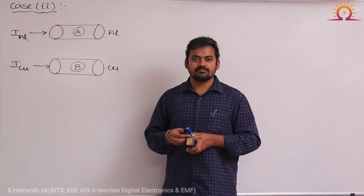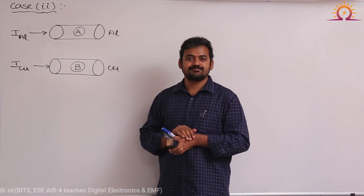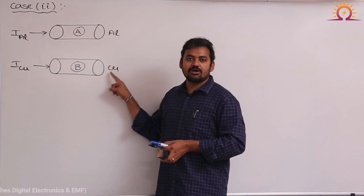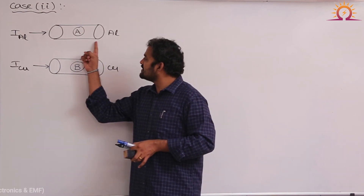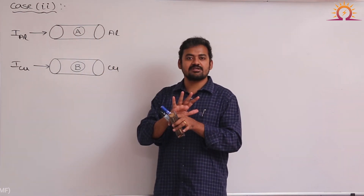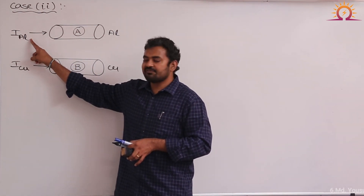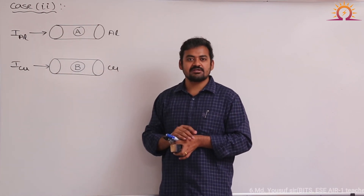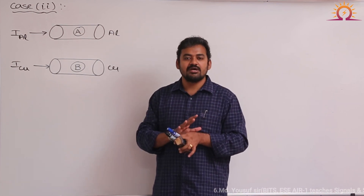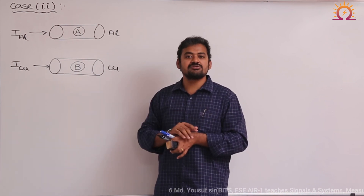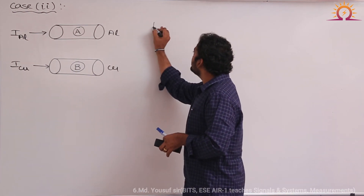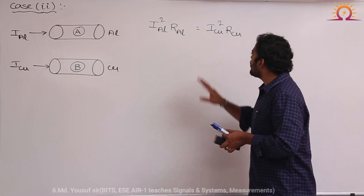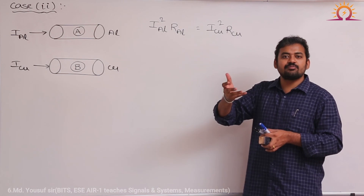Now let us see Case 2. I am comparing aluminum winding and copper winding in two electrical machines of the same size — same length and same cross-sectional area. Machine A uses aluminum winding with current capacity I_AL, and Machine B uses copper winding with current capacity I_CU. If I want to design both machines for the same temperature rise as well as the same copper loss, then if both machines generate the same temperature, they must have the same copper loss. Therefore, I equate aluminum conductor copper losses to copper conductor copper losses.